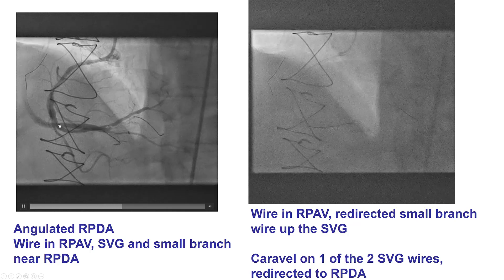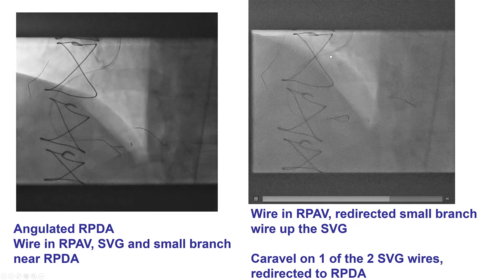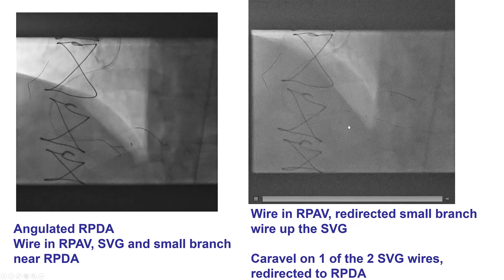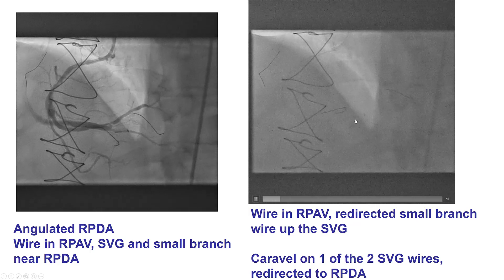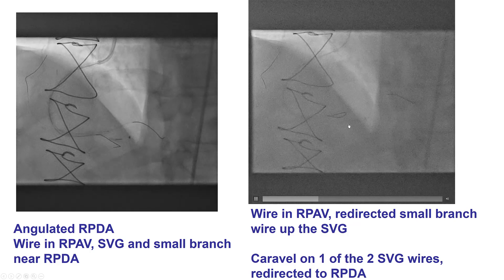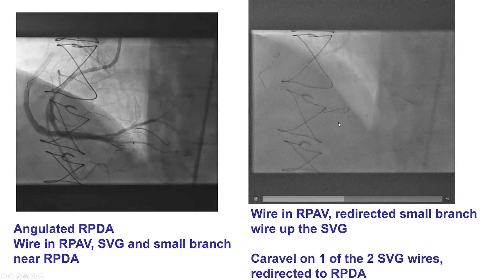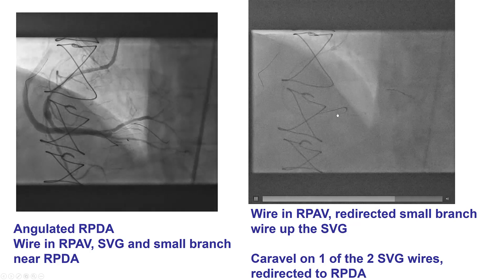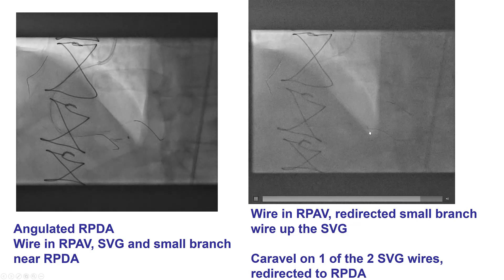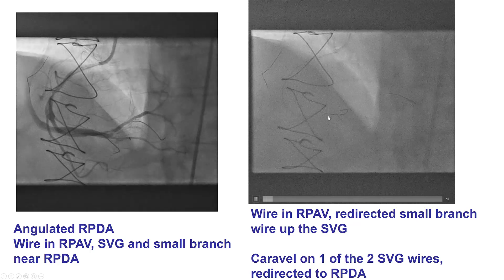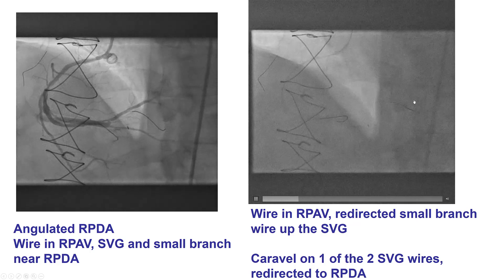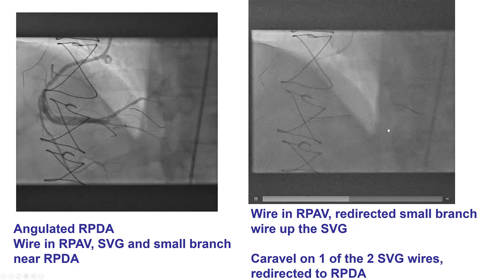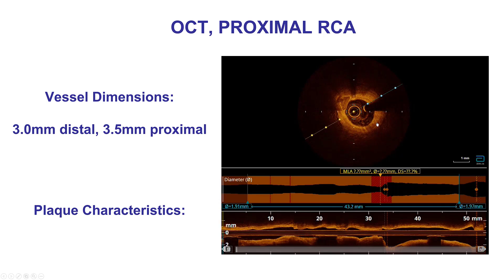The wire then went retrograde into the saphenous vein graft. So we advanced the Caravel further down into the PDA, pulled back the guidewire, and then slowly tried to rewire while withdrawing the Caravel. Eventually, by doing that, we were able to advance antegrade into the PDA. We now have wires in both vessels, and we replaced the Sion Black with a workhorse guidewire before performing the different steps of stenting.